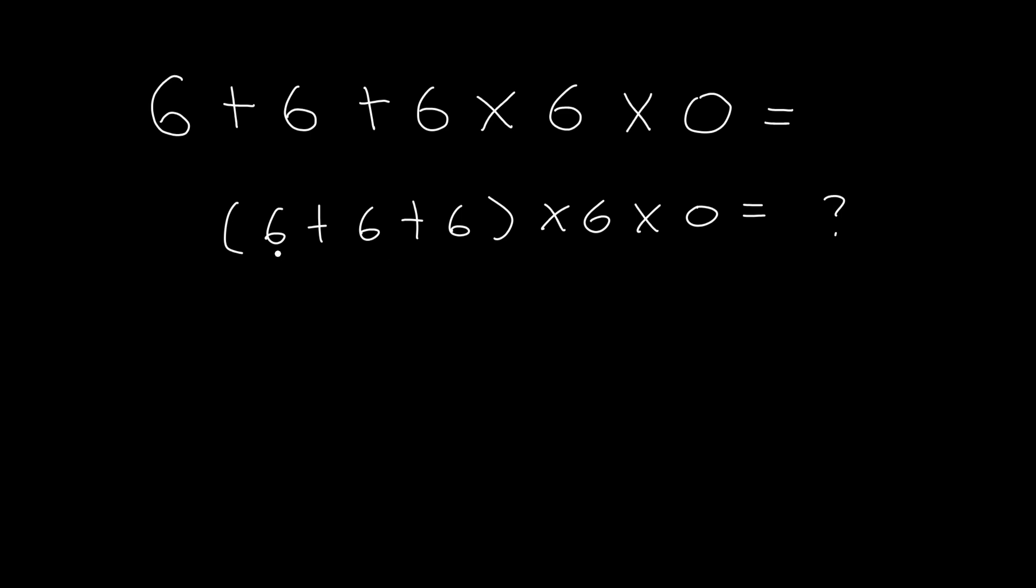That's 6 plus 6, 12 plus 6 is 18 times 6 times 0. Then 18 times 6 is 108 times 0, which is 0.